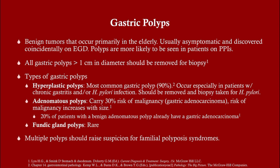All gastric polyps that are more than one centimeter in diameter should be snared out for biopsy. There are a few different kinds: the most common is hyperplastic, just like hyperplastic polyps of the colon, which tend to be benign. There are also adenomatous polyps, which tend to have a higher risk of malignancy, just like adenomatous polyps of the colon — you should always remove these. You can't tell if you're dealing with a hyperplastic or adenomatous polyp just by looking at it, so we err on the side of removing anything bigger than one centimeter. If there is an adenomatous polyp, there's actually a 20% chance the patient has an adenocarcinoma somewhere.